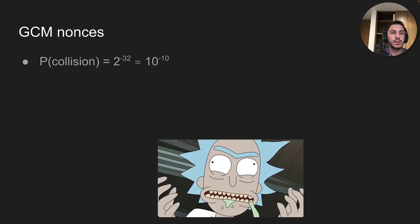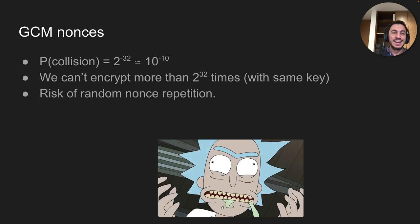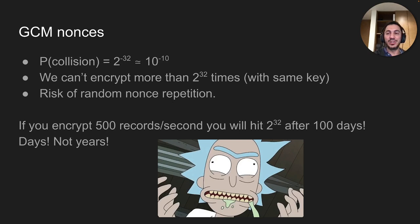The probability of collision should be less than 2^-32, which is around 10^-10. We can't encrypt more than 2^32 times with the same key. Consider an organization encrypting 500 records per second — pretty common for an average-size company. You will hit that number after 100 days — not years, days. That's why it's important to have considerations when implementing GCM.